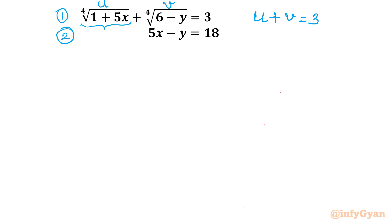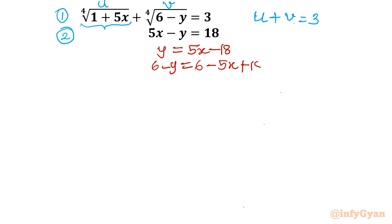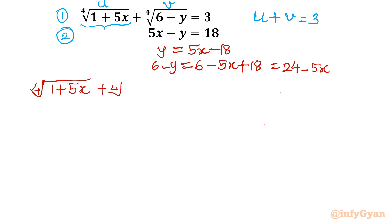Now from equation number 2, I can write y equals 5x minus 18. So, if I write 6 minus y, this value would be 6 minus (5x minus 18), which gives us 24 minus 5x. So in place of 6 minus y, I can write 24 minus 5x.